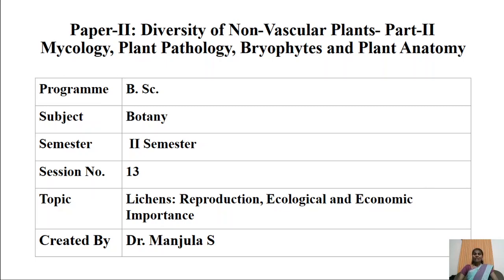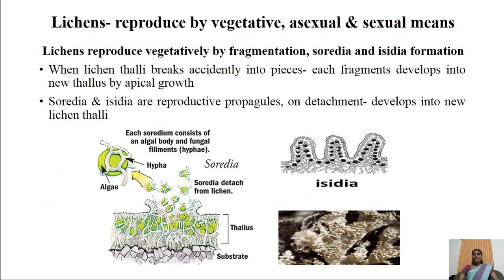In today's session let us study about reproduction of lichens and their ecological and economic importance. Lichens reproduce by three important methods: vegetative, asexual, and sexual. Lichens reproduce vegetatively by fragmentation, soredia, and isidia formation.